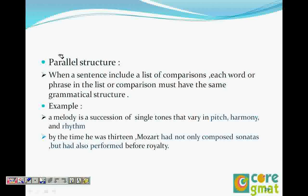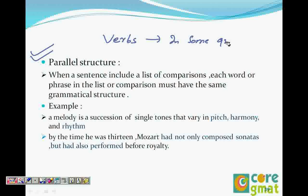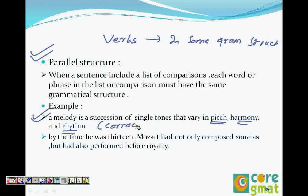When we have a list in a sentence, the items in the list should be in the same grammatical structure. For example: 'A melody is a succession of single tones that vary in pitch, harmony and rhythm.' Pitch is a noun, harmony is a noun, and rhythm is a noun — so they are in the same grammatical form. Therefore the sentence is correct.